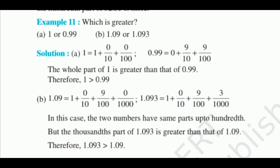In this case, the two numbers have same parts up to hundredth, but the thousandth part of 1.093 is greater than that of 1.09. Therefore, 1.093 is always greater than 1.09 as we have compared the thousandth part of both digits.